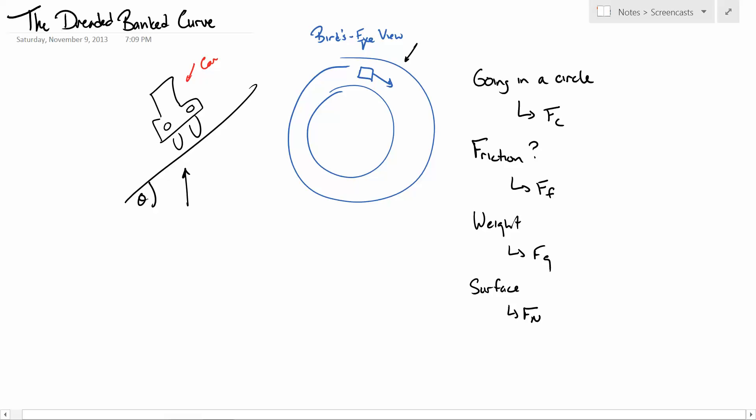theta. And so, it's going in a circle, so there's definitely going to be some issue of centripetal forces. There may or may not be friction, so we may have to worry about a frictional force. The car may have some weight, most of them do, so we've got to worry about gravity. There's a surface involved, so there's a normal force, and we're probably going to have to deal with some kind of rotated, possibly, coordinate system. So this gets kind of messy.